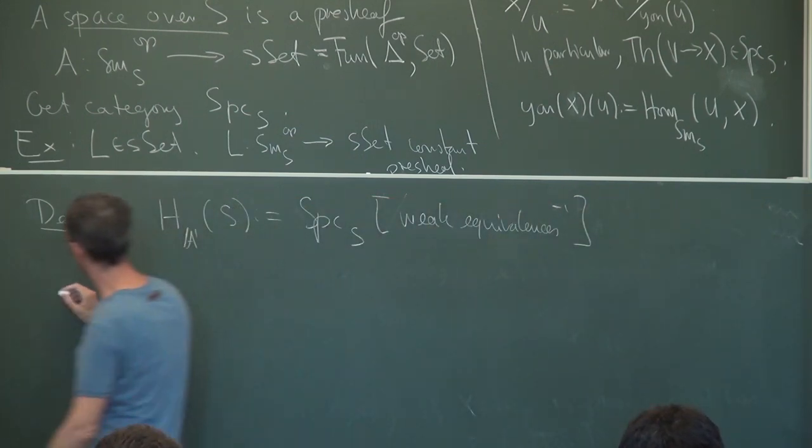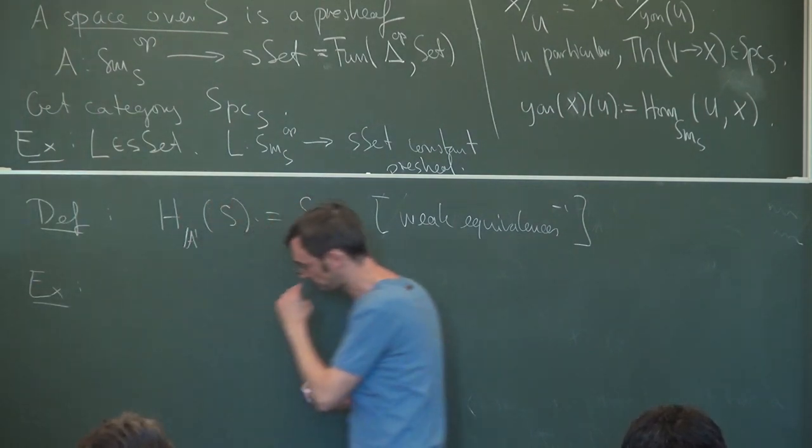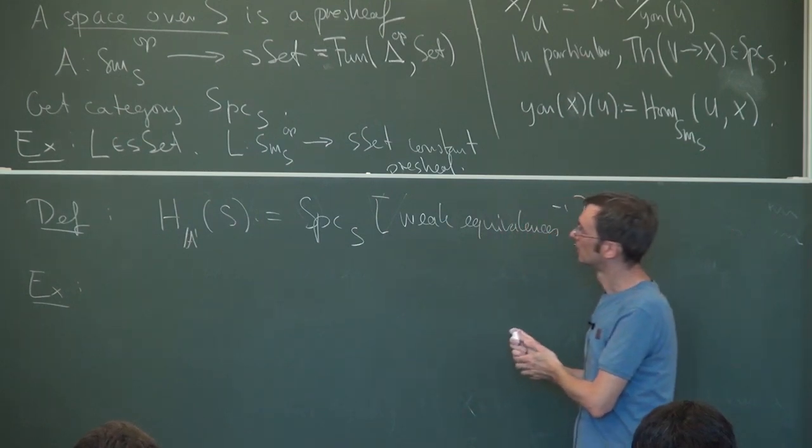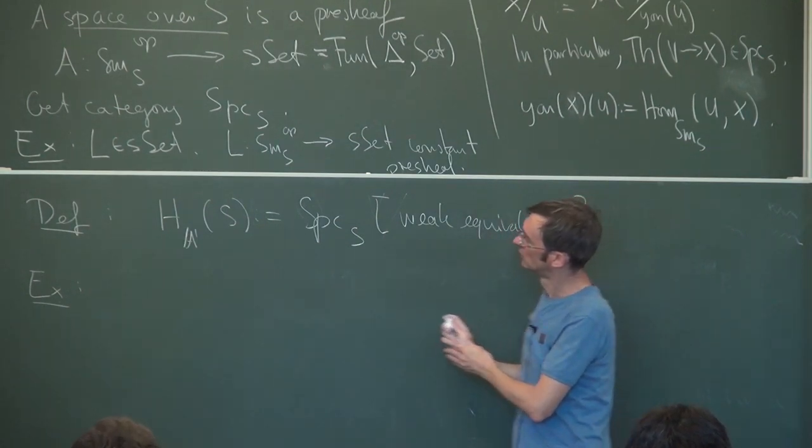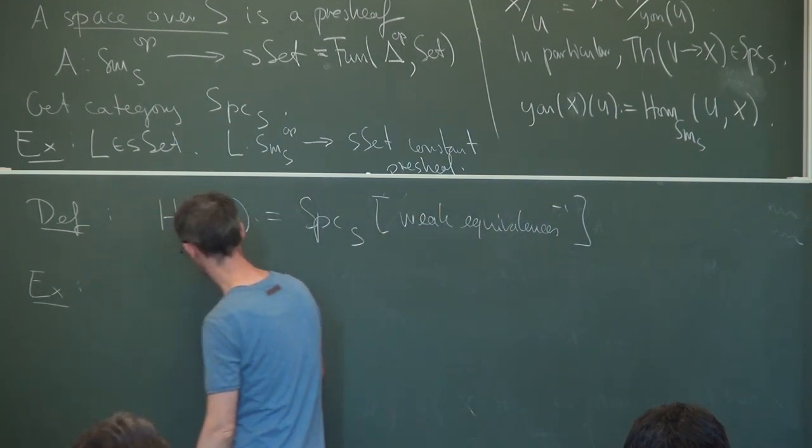So if we have these weak equivalences, one can then define this A1 homotopy category of S as inverting the weak equivalences.